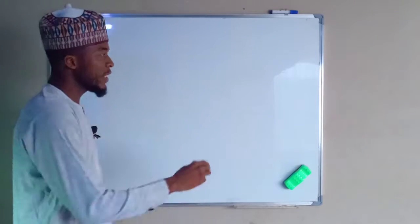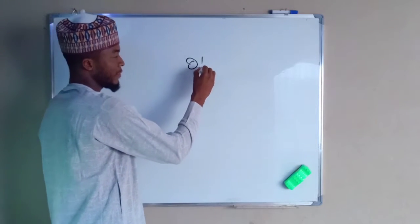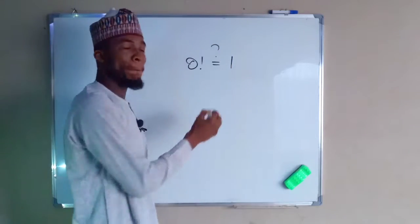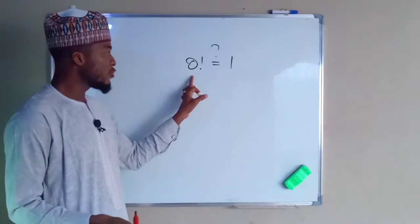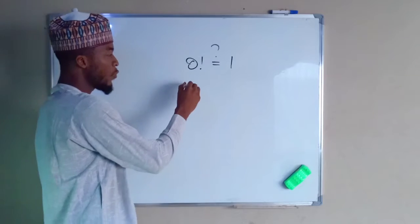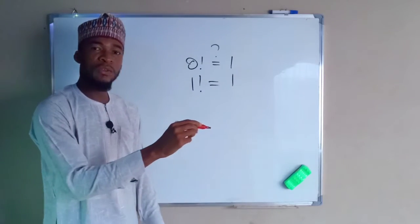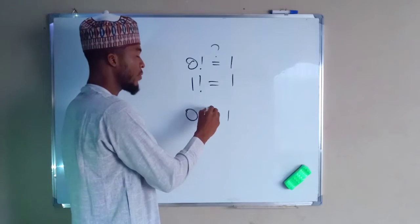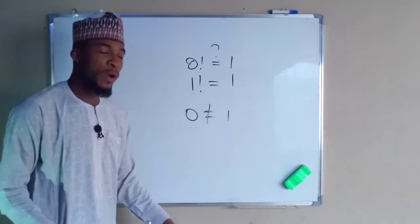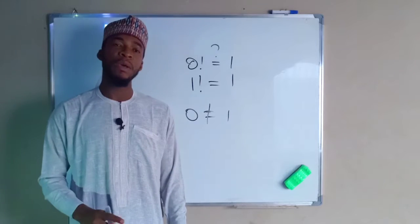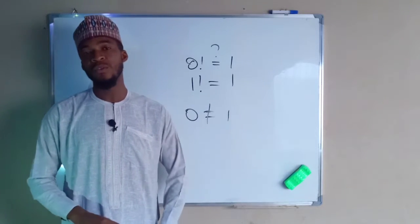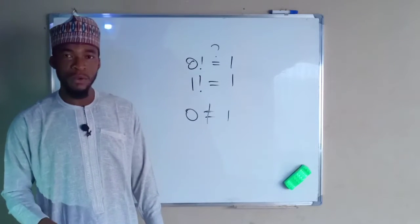Why is 0 factorial equals to 1? And if 0 factorial is equal to 1, why is 1 factorial also equal to 1? Because we all know that 0 is never equal to 1. So why is this so? I know the curious ones among you would like to know why. So let us look at the logical proof.